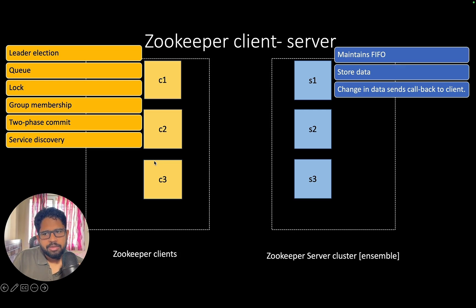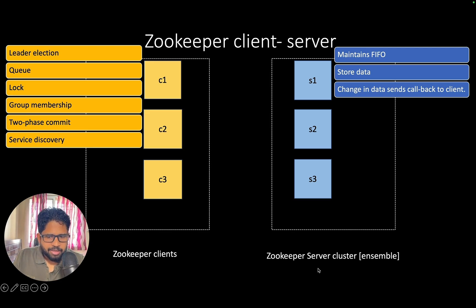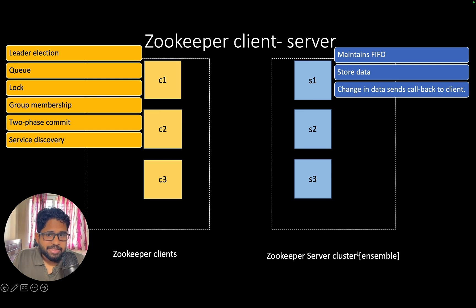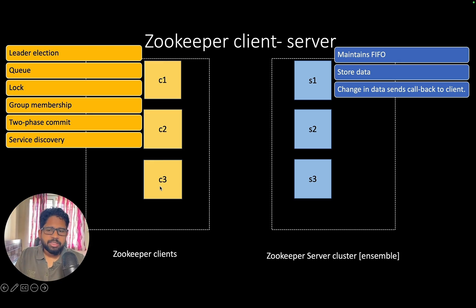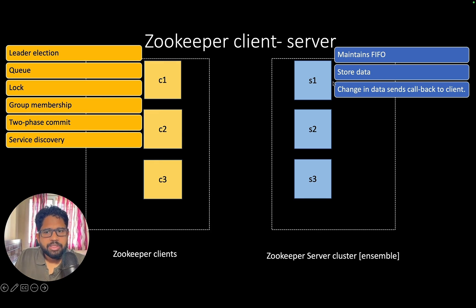You can divide ZooKeeper into two sections: the client and the server. The server is actually a cluster of multiple machines — machine one, machine two, machine three — and these together are called the ZooKeeper ensemble. The clients — client one, client two, client three — can be located anywhere in the world, including across data centers.